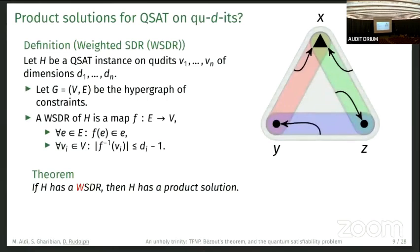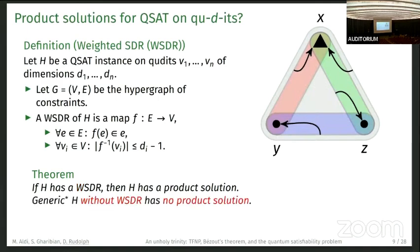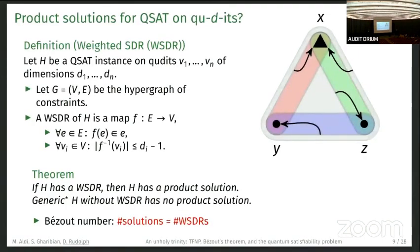The same theorem now, just generalized: if H has a WSDR, then H has a product solution. A generic instance H without a WSDR has no product solution.